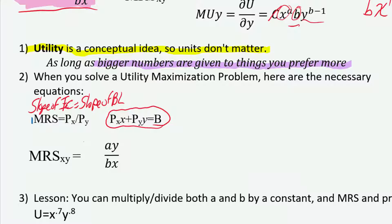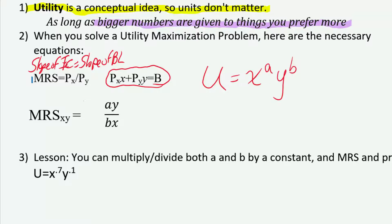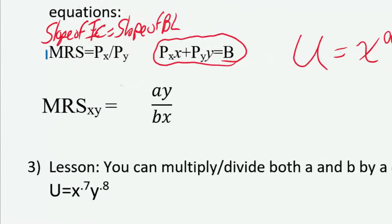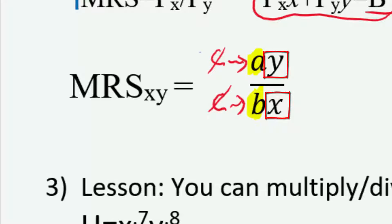So since the number for utility doesn't matter and we can get rid of that constant, here's something else we can do. Whenever we have a utility function with arbitrary exponents a and b, what really matters when you calculate marginal rate of substitution is the ratio of a to b. We can take the exponent a and multiply it by any constant c, as long as we multiply the bottom exponent b by that same constant c — because that constant drops out of the ratio. It's really just the ratio a divided by b, times y over x, that matters.